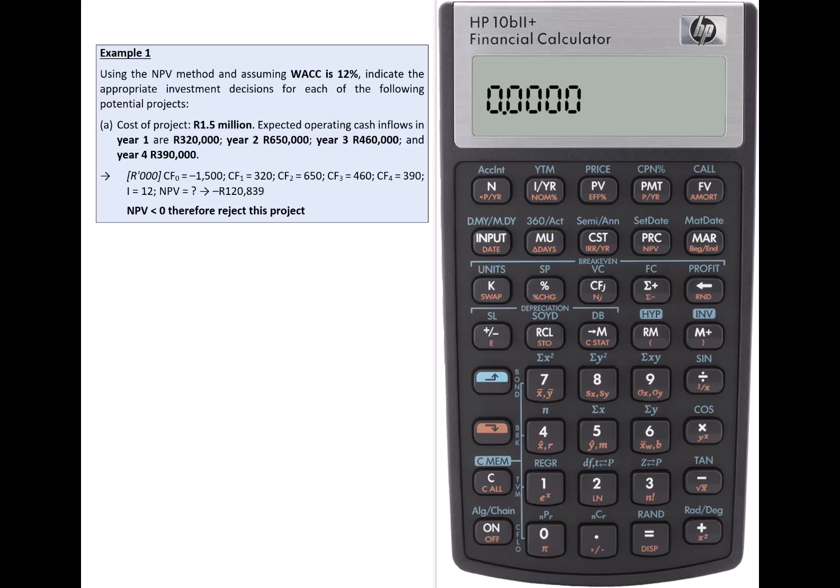How to use the Hewlett-Packard 10bII calculator to determine a project net present value given its cost, operating cash flows, and a weighted average cost of capital. We will use the example on the left-hand side of the screen.